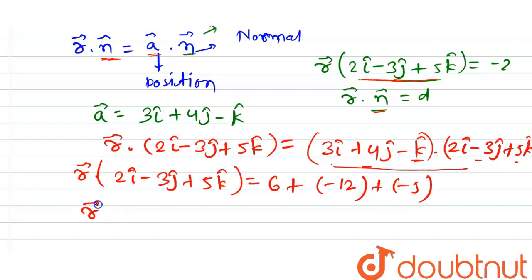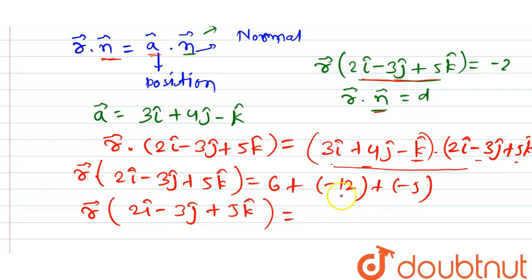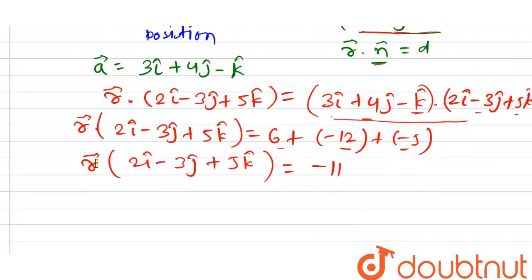Hence we get: vector r dot (2î − 3ĵ + 5k̂) = 6 − 12 − 5 = −11. So −6 − 5 = −11. Therefore, this is our required equation of the plane. Thank you.